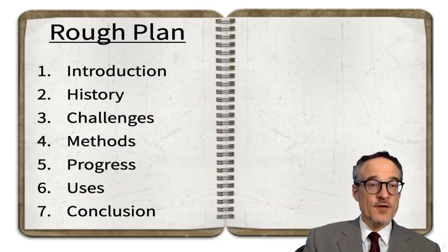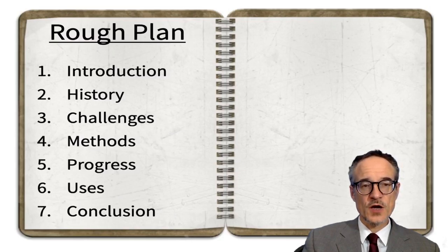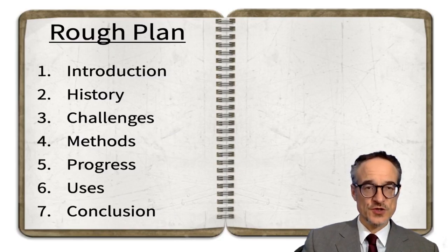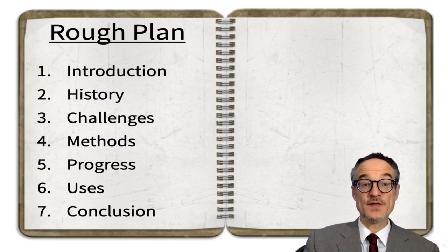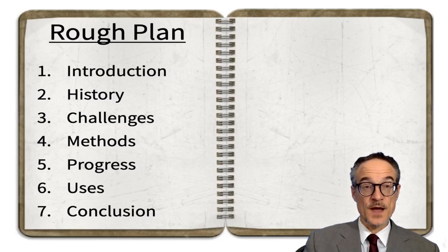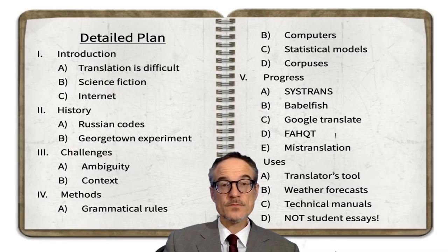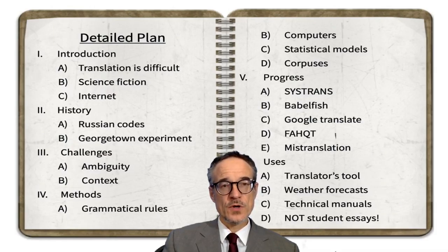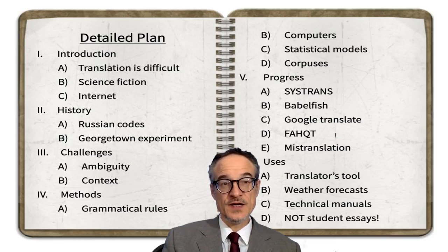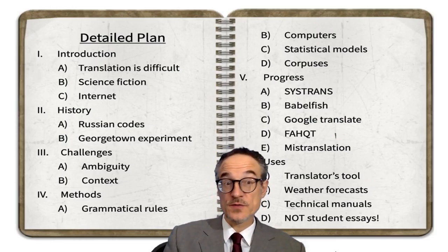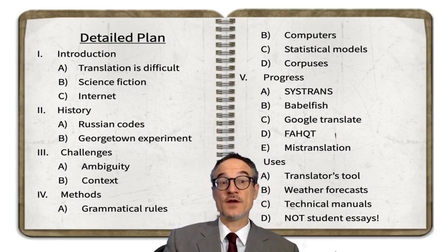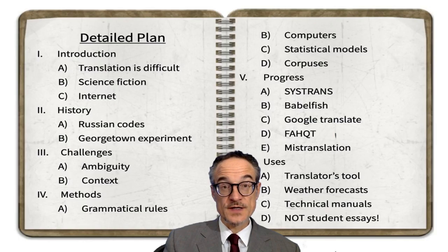So here's a rough plan — this is writing about machine translation. The rough plan has seven parts: introduction, history, challenges, methods, progress, uses, and conclusion. Here's a more detailed plan where you can see each part — these are going to be paragraphs, and each paragraph has different ideas in it.